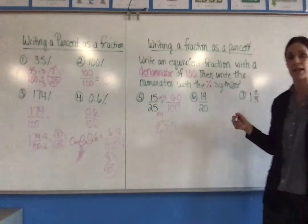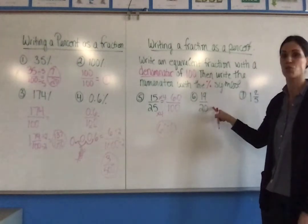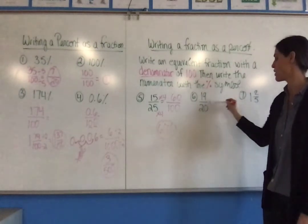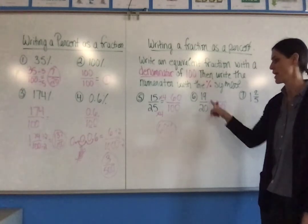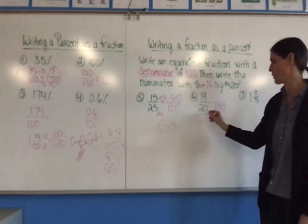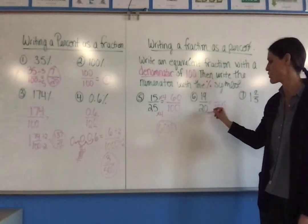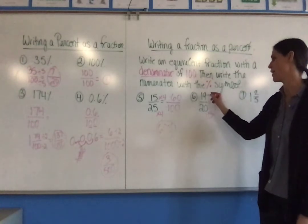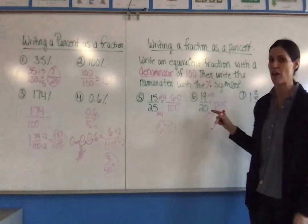In number six, same idea. I have 19/20. I'm going to make it out of 100, because percents are out of 100, and then find an equivalent fraction. 20 times 5 is 100, so I also have to multiply 19 times 5.